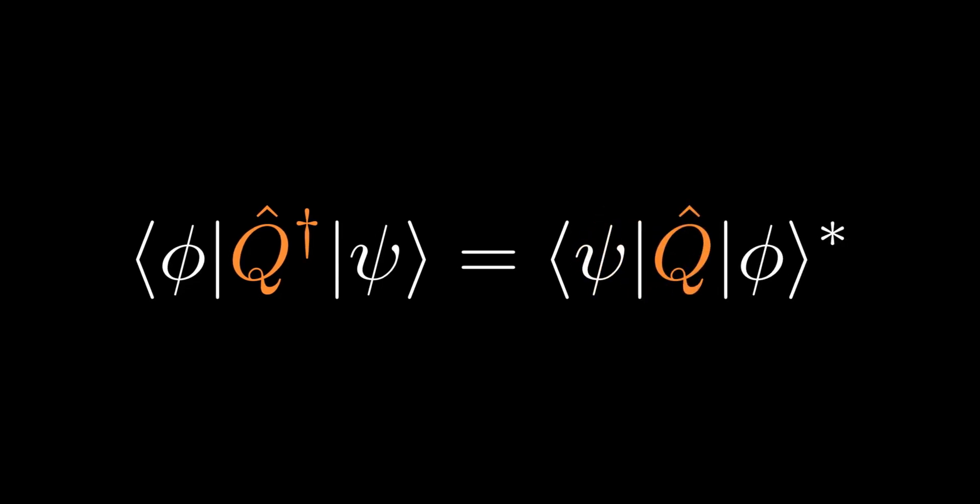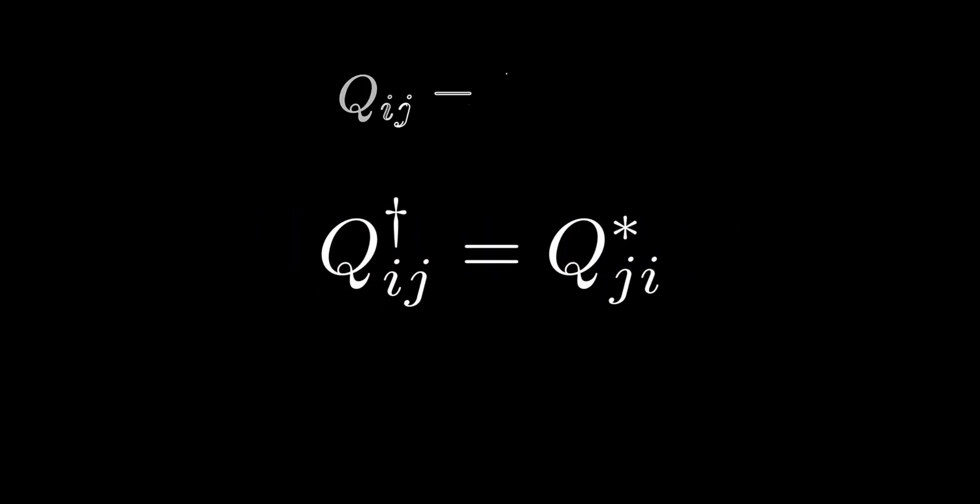Choosing the ket and the bra from a basis set by setting ket ψ equals to ket j and bra ϕ equals to bra i yields Q dagger ij equals to Qji star where the matrix element is defined as Qij equals to bra i Q ket j. This demonstrates that the Hermitian adjoint in matrix representation is just the conjugate transpose.